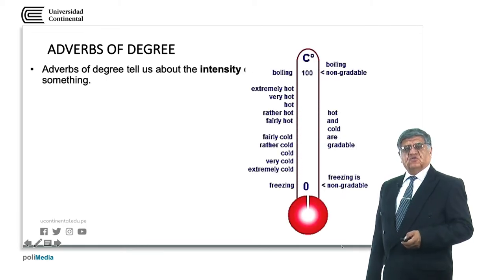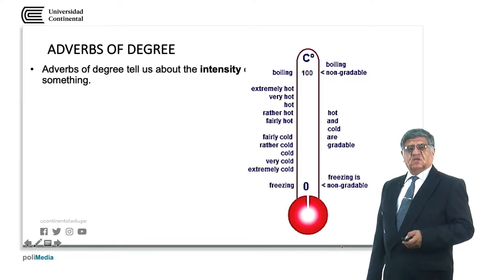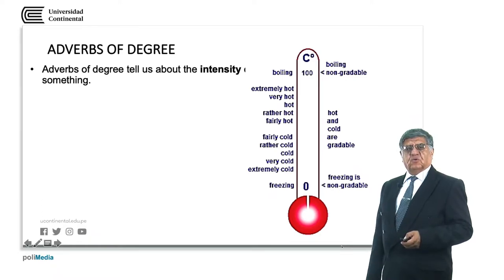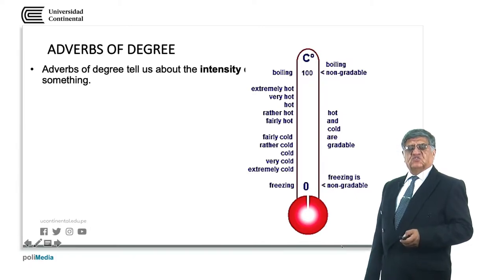Adverbs of Degree will talk about the intensity of something. Let's talk about temperature — the freezing point zero and the boiling point 100 Celsius degrees. Let's divide the scale in two parts: cold and hot.